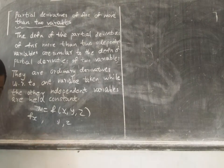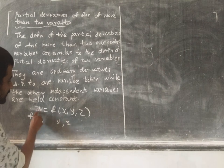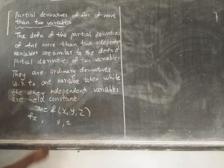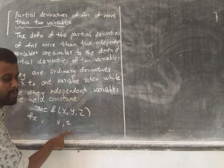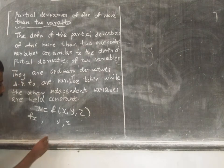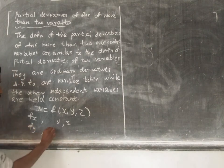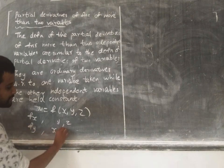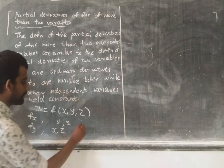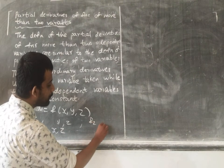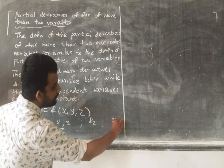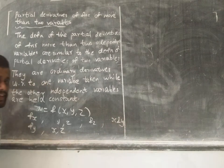The next example: a number is equal to f of x, y, z. So the partial value with respect to x, holding y and z constant. Otherwise, partial value with respect to y, holding x and z constant. Then partial value with respect to z, holding x and y constant.